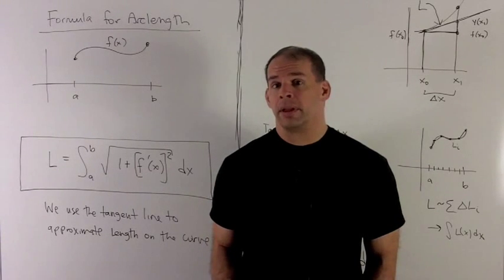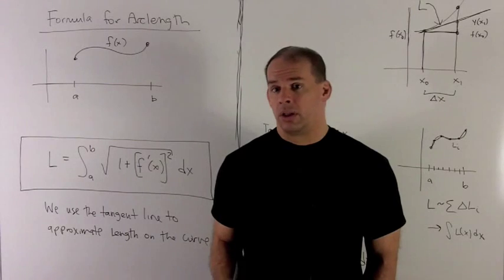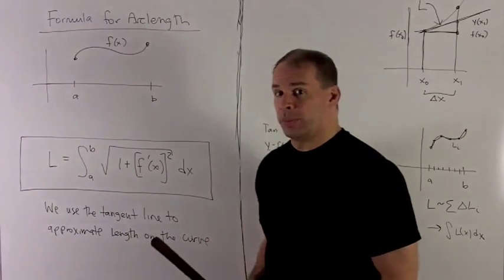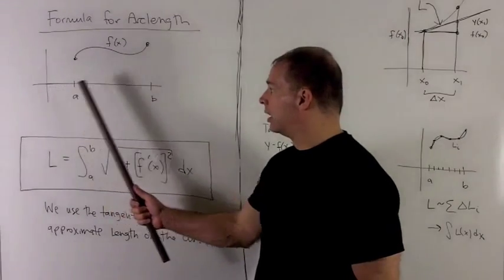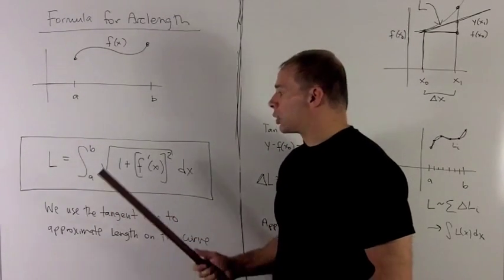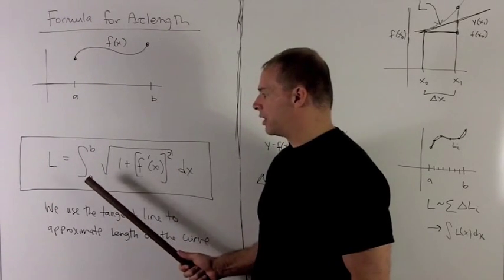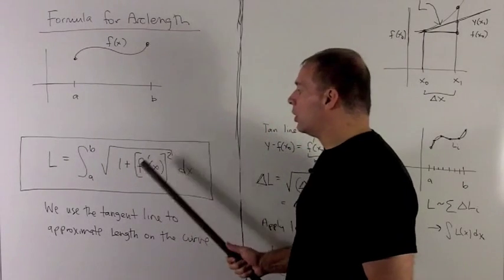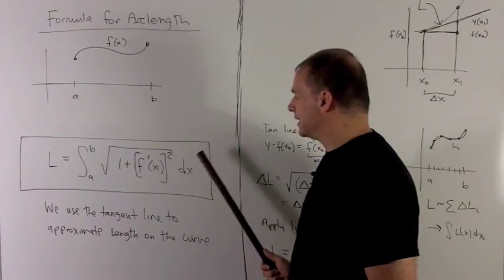We're now going to take a look at the formula for the arc length along the curve of the function f between the points x equals a and x equals b on the x-axis. Our formula is going to be arc length equals the definite integral from a to b of the radical of 1 plus f prime squared dx.